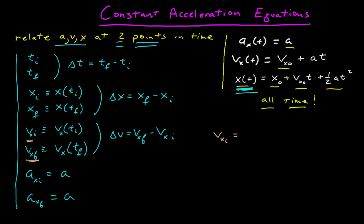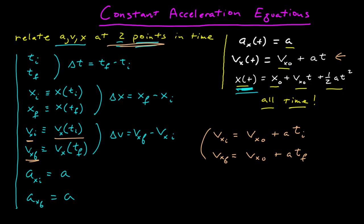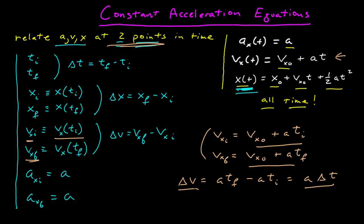My initial velocity is equal to the velocity function evaluated at the initial time — that's my velocity at time zero plus a times the initial time. My initial time doesn't have to be zero; it's just the earlier of the two points in time that I'm interested in. My final velocity is the velocity at t equals zero plus a times the final time. Now I can calculate this difference. Delta v, which is final minus initial — the velocity-at-zero terms cancel — and I just get a times t final minus a times t initial, which I can factor out as a times delta t. So there's my first relationship.